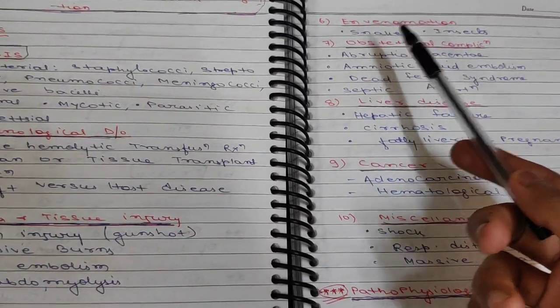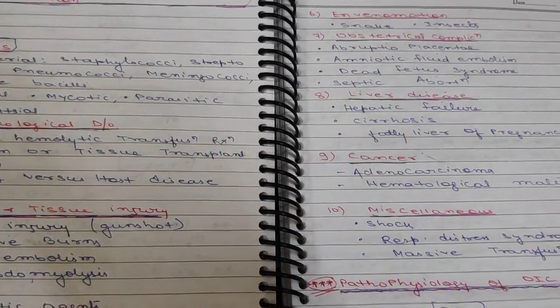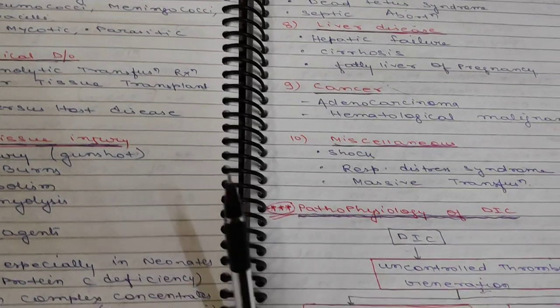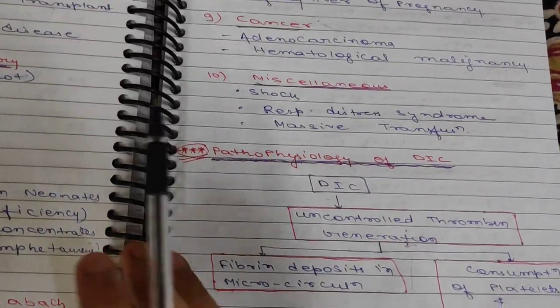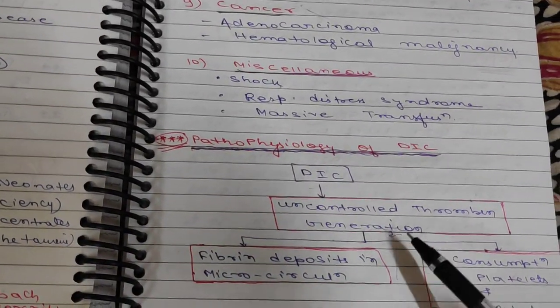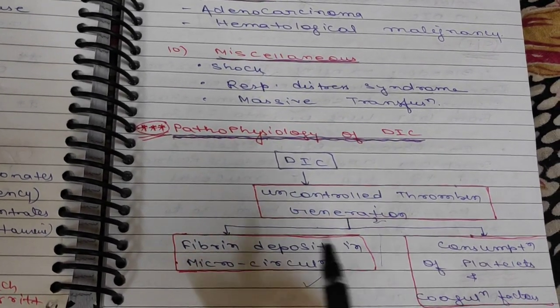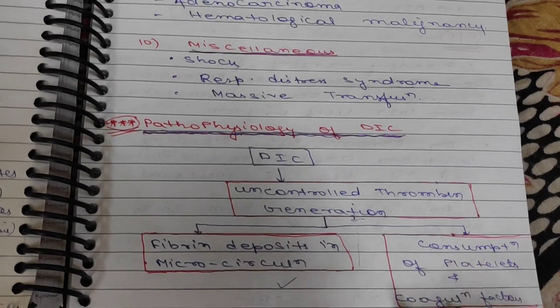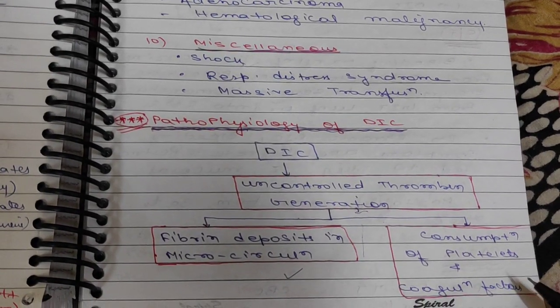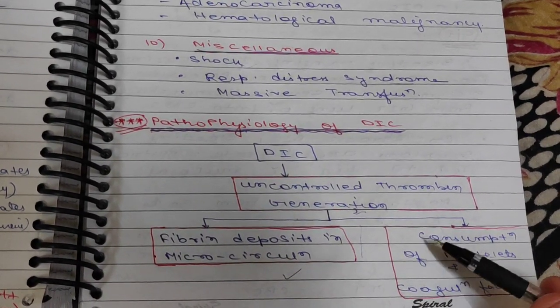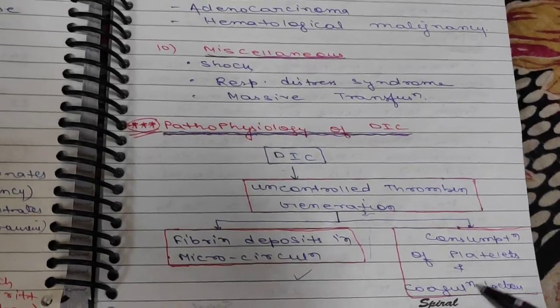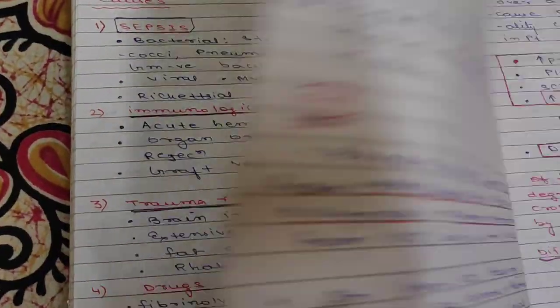What is the pathophysiology of DIC? DIC is due to uncontrolled thrombin generation, which leads to fibrin deposition in microcirculation and increased consumption of platelets and coagulation factors. Due to increased consumption of coagulation factors and platelets, there will be a decrease in their amount.